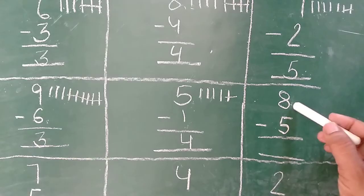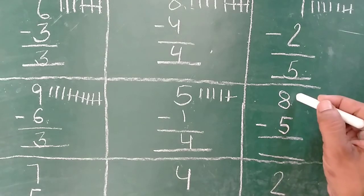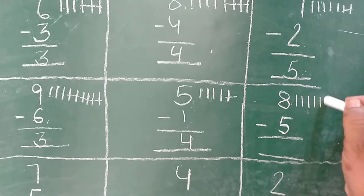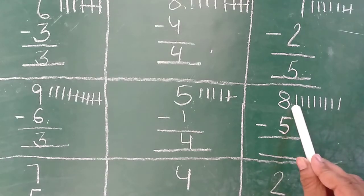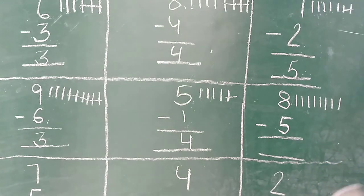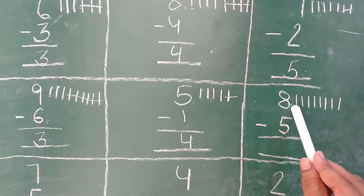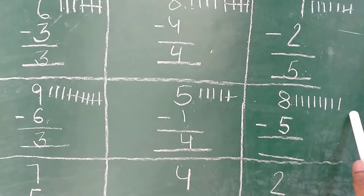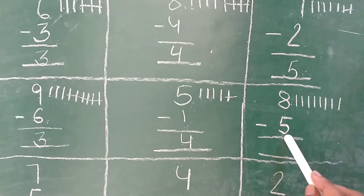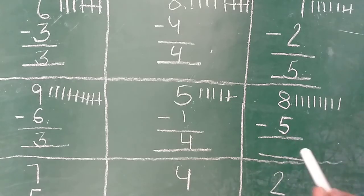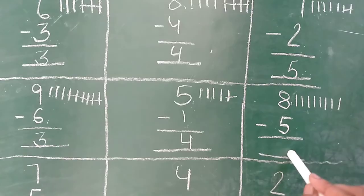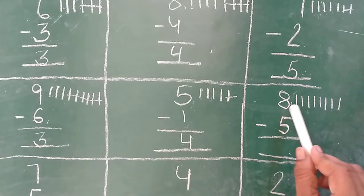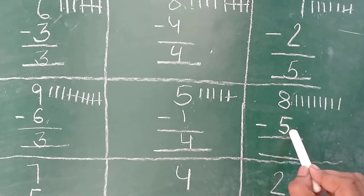Ab next bata ye. Next hum kya karenge? Eight lines draw karenge. Aapko dobara se puchti hoon — kye eight lines draw kiyo ki hamne? Kyunki upar jo number hota hai, usi ke jitni lines hume subtraction me draw karni hoti hai. Or niche waale number ko us me se cross karna hota hai. Dhyan rakhna: jab addition karte hai, toh upar aur niche dono ki lines draw karte hai. Lekin subtraction me sirf upar wala number — jo bigger number hota hai — us me se smaller number ko cross karna hota hai. Is that clear everyone?